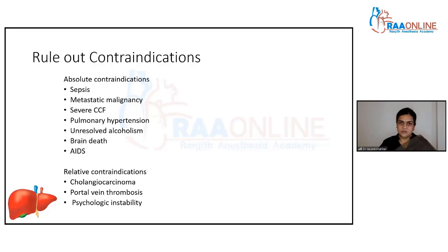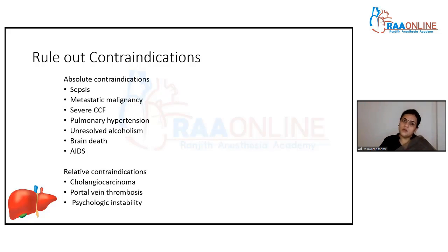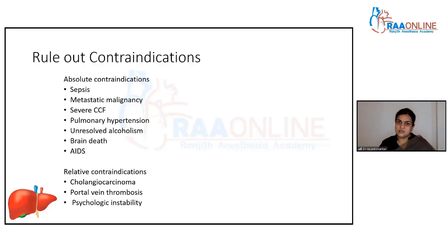Relative contraindications include cholangiocarcinoma, portal venous hypertension, and psychological instability. A liver transplant is not just a 10-to-12-hour surgery — it is a lifelong commitment. The patient must maintain immunosuppression, prevent infections, and prevent complications. Unless a person is psychologically stable with good home infrastructure and support, there is no point in giving them a new liver.